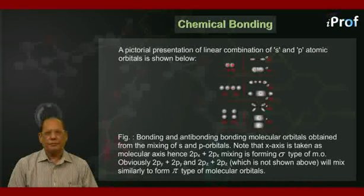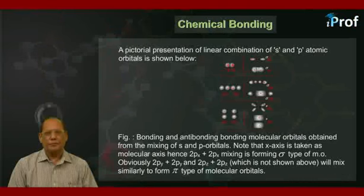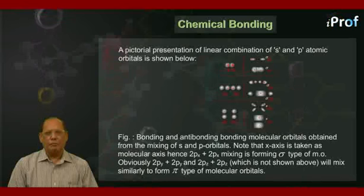In all the future examples, we shall be selecting x-axis as the molecular axis. That's why, the linear combination of two px orbitals is giving sigma type of molecular orbitals. The other combinations of py py and pz pz will obviously give pi type of molecular orbitals.